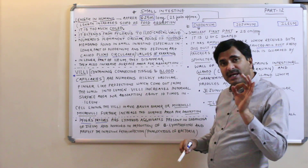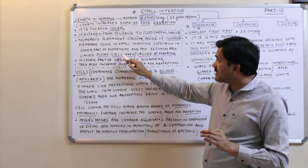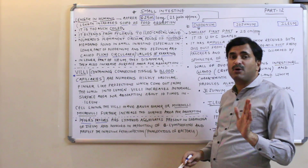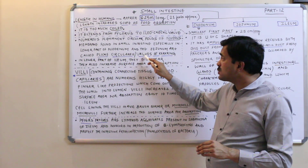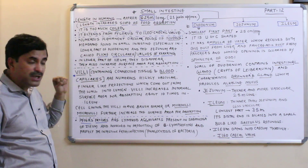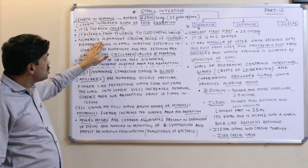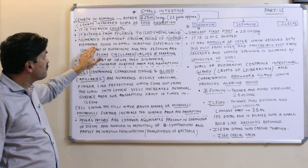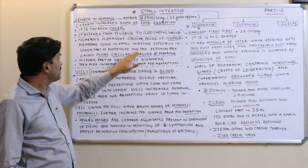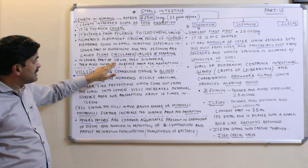There is a very important structure found in the small intestine which increases the absorptive surface area, known as the plica circulares — also called the valves of Kerckring. These are numerous permanent circular folds of mucous membrane found in the small intestine, especially in the lower part of the duodenum and the jejunum. In the lower part of the ileum, they disappear.